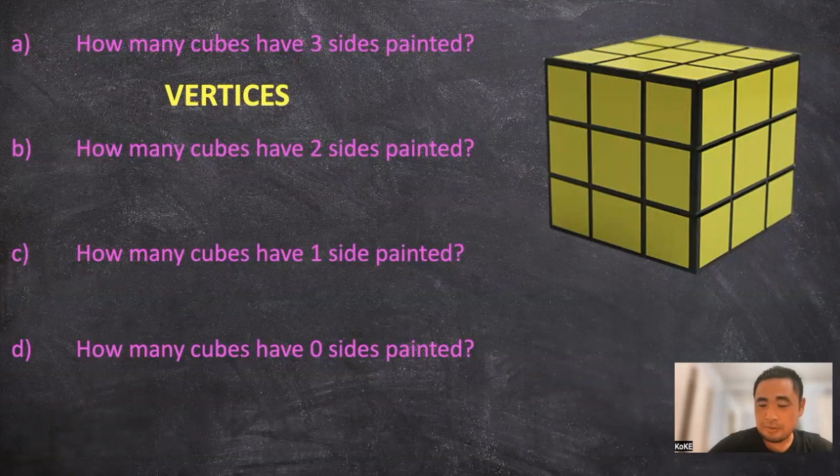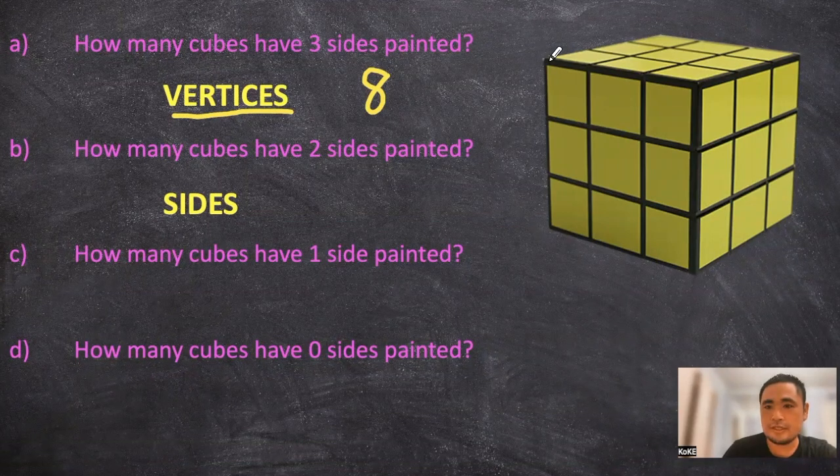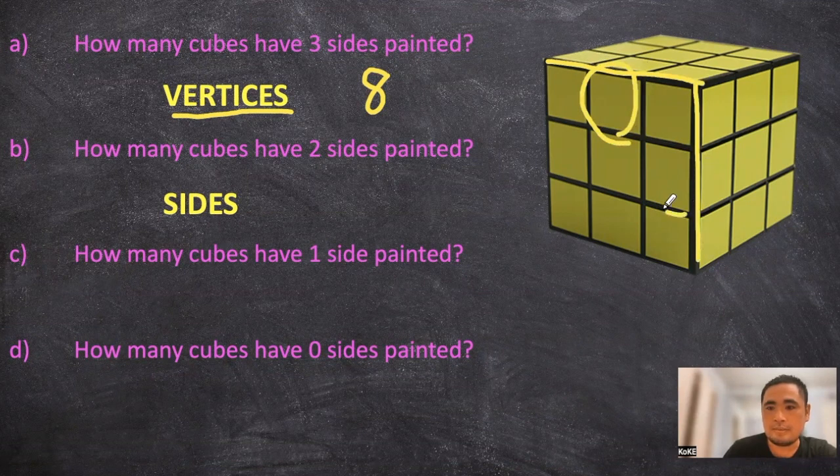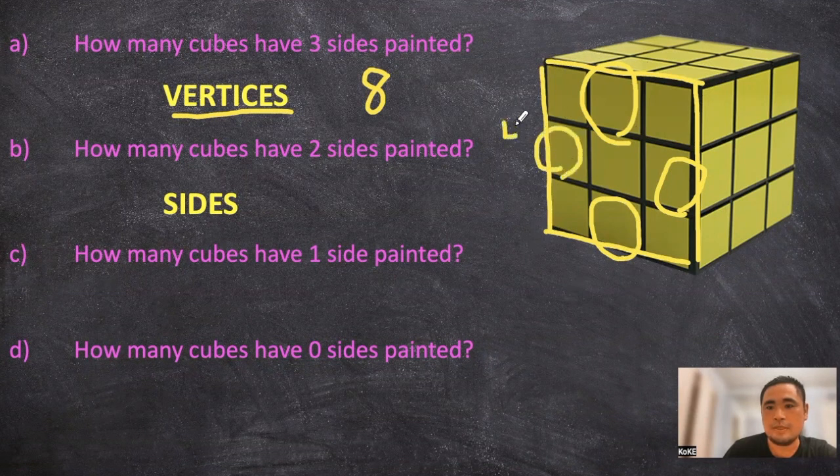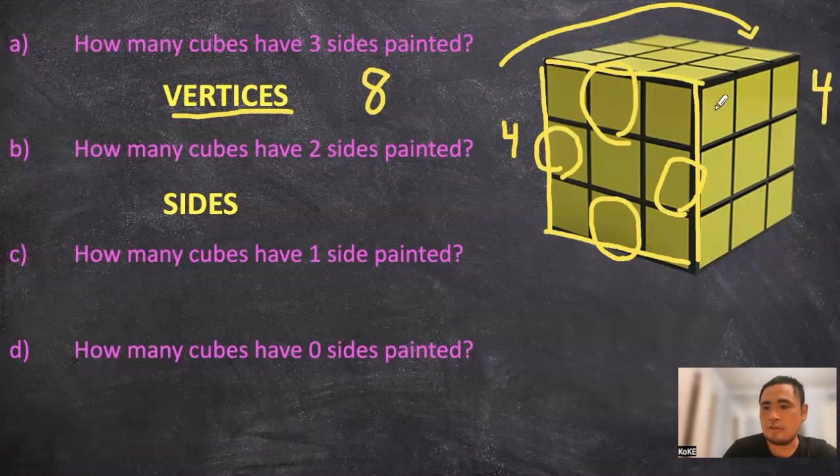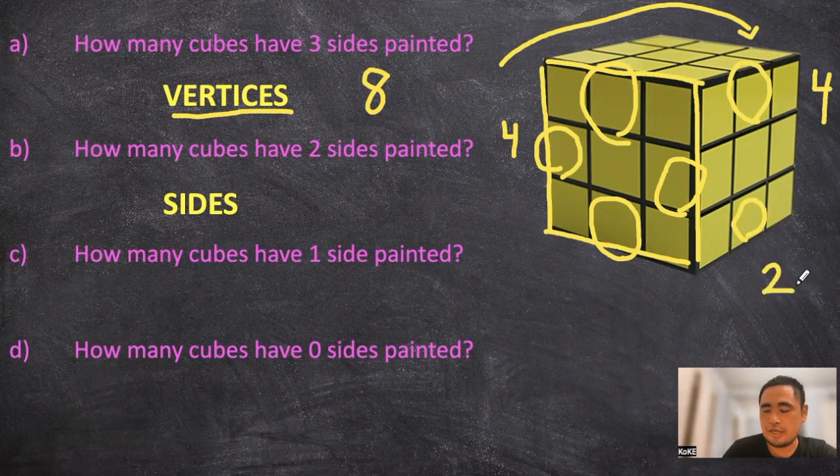Part B, how many cubes have 2 sides painted? For part B, we can pay attention to the number of sides. If you take a look at the first side right here, that's going to be this cube. Take a look at this side, that's going to be this cube. The bottom side, this cube. And this side is going to have this cube. That means there's 4 here. That means there's going to be 4 on the other side. And then for the other 2 sides, the top and the bottom are going to have 2 sides that are painted. And that means there's going to be 2 on this side for a total of 12 cubes.